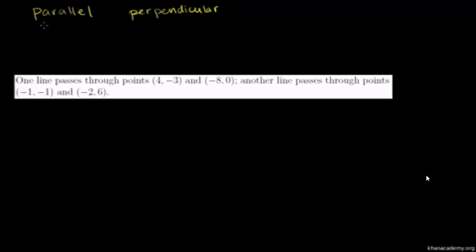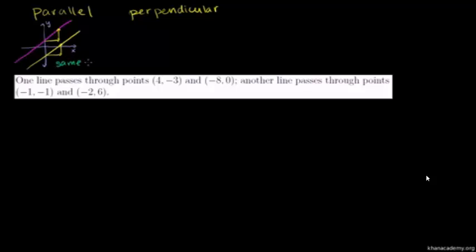Let me draw some axes. So those are my coordinate axes — that's my x-axis, that is my y-axis. If this is a line I'm drawing in magenta, a parallel line might look something like this. It's not the exact same line, but they have the exact same slope — the same change in y over change in x. And that's why they never intersect. Parallel lines have the same slope.